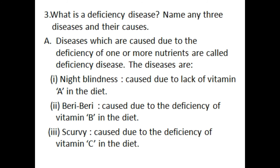What is a deficiency disease? Name any three diseases and their causes. Diseases which are caused due to the deficiency of one or more nutrients are called deficiency diseases. The diseases are: night blindness, caused due to lack of vitamin A in the diet; beriberi, caused due to the deficiency of vitamin B in the diet; scurvy, caused due to the deficiency of vitamin C in the diet.